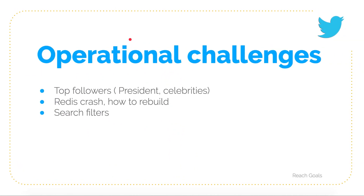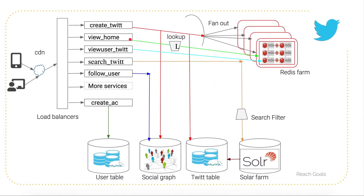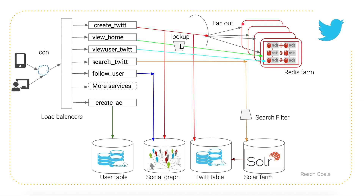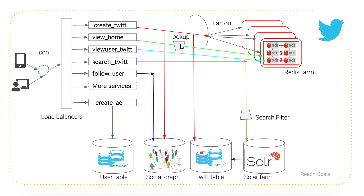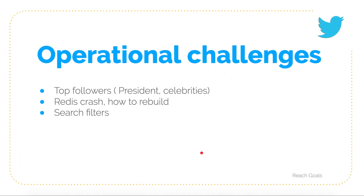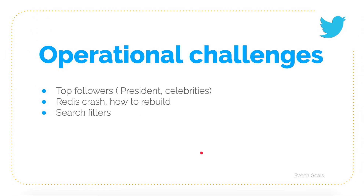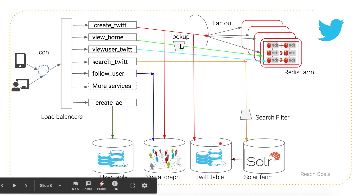The second operational challenge is rebuilding the Redis cache. Say one Redis instance goes down or crashes — all information stored in it is lost. To rebuild, you repeat the same process: for that specific user, figure out who their followers are, retrieve all tweet information from the tweet table, and reconstruct the Redis cache by adding the data back in.